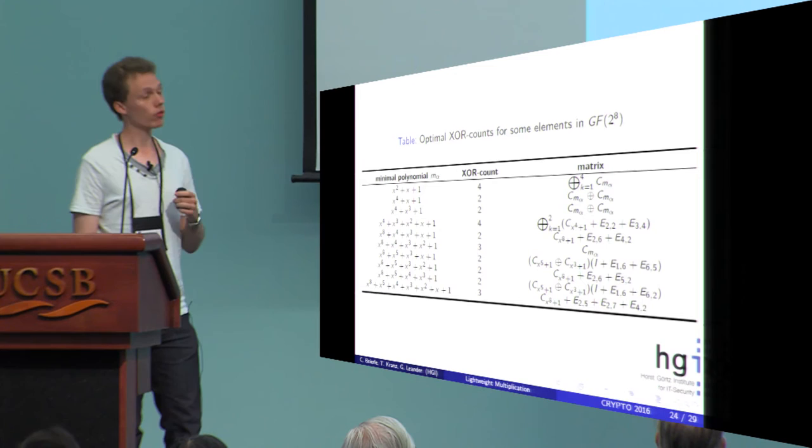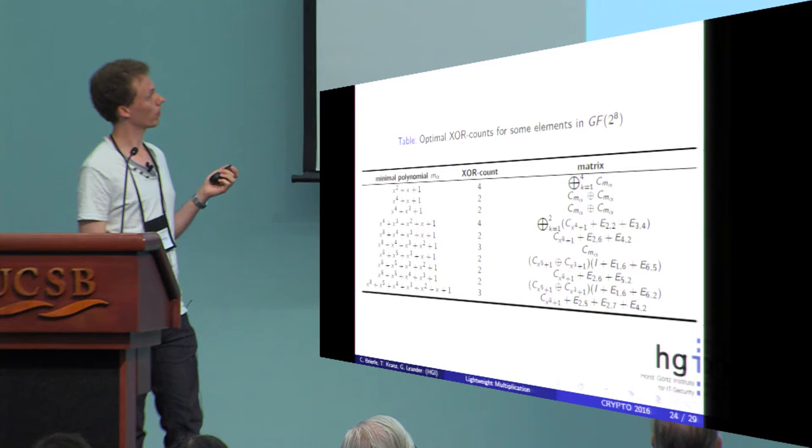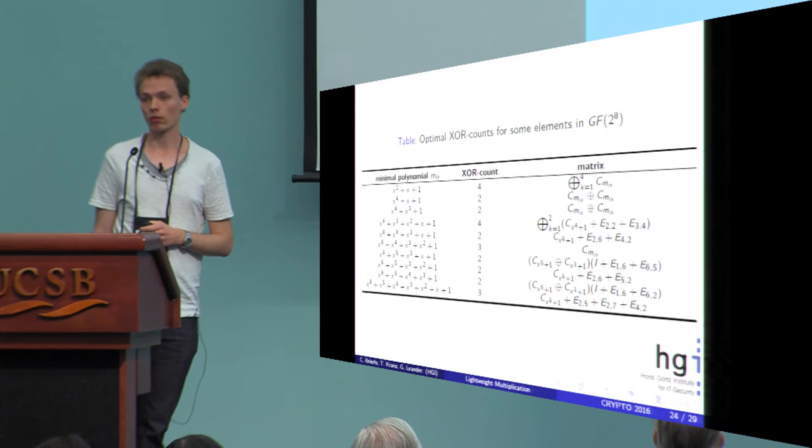What is also interesting is that not every minimal pentanomial leads to an XOR count of two. There are pentanomials which have a minimal XOR count of three, which indicates that this structure is not that easy to see.